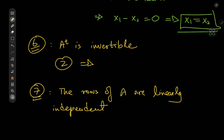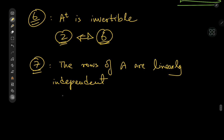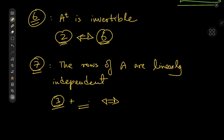Statement 2 is equivalent to statement 6 by the property that the determinant of A transpose equals the determinant of A. For statement 7, if A transpose is invertible, then its column vectors are linearly independent. Since the column vectors of A transpose are the row vectors of A, statements 3 and 6 together are equivalent to statement 7.